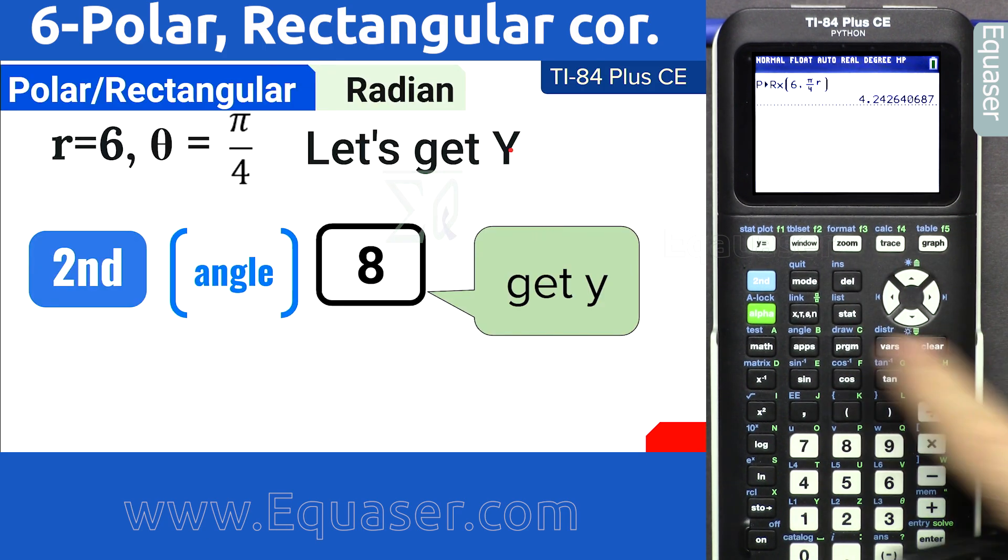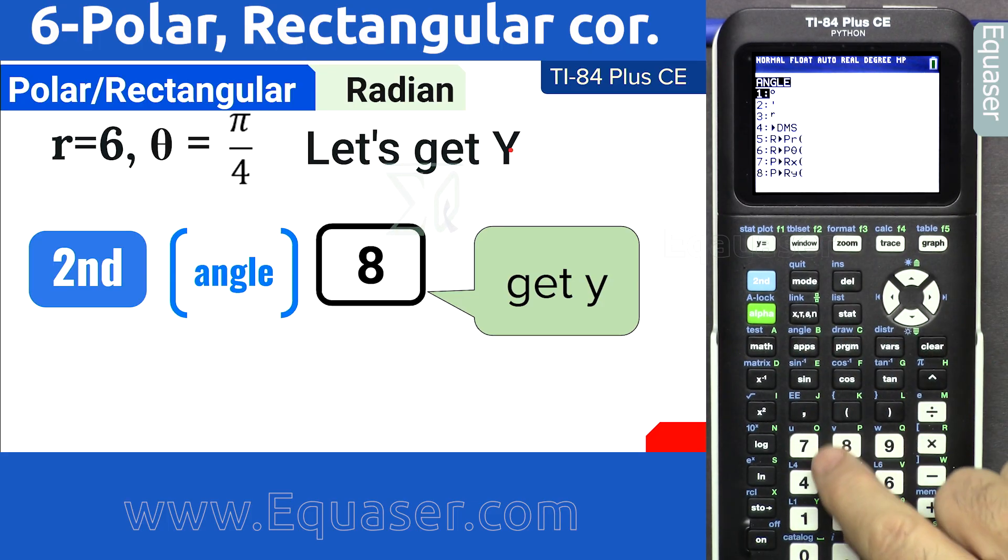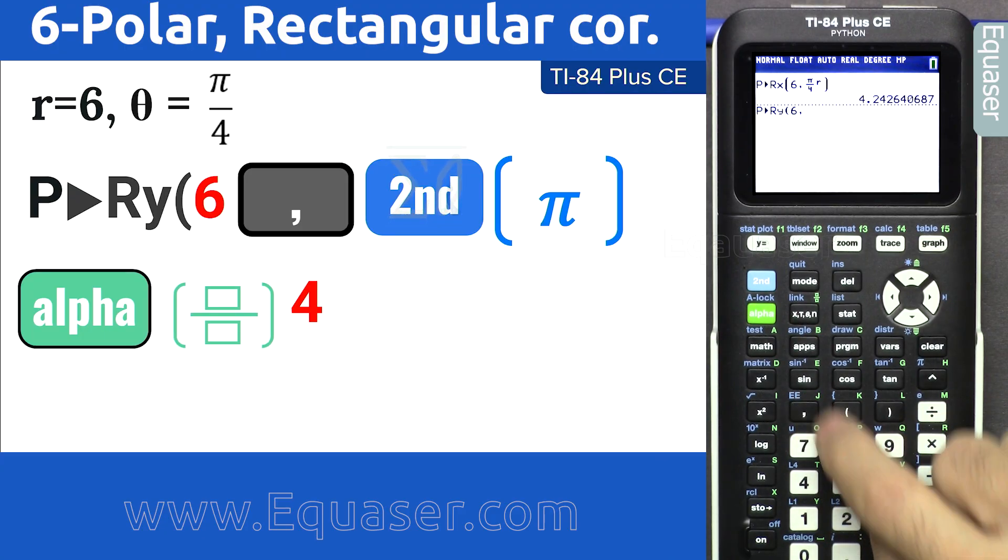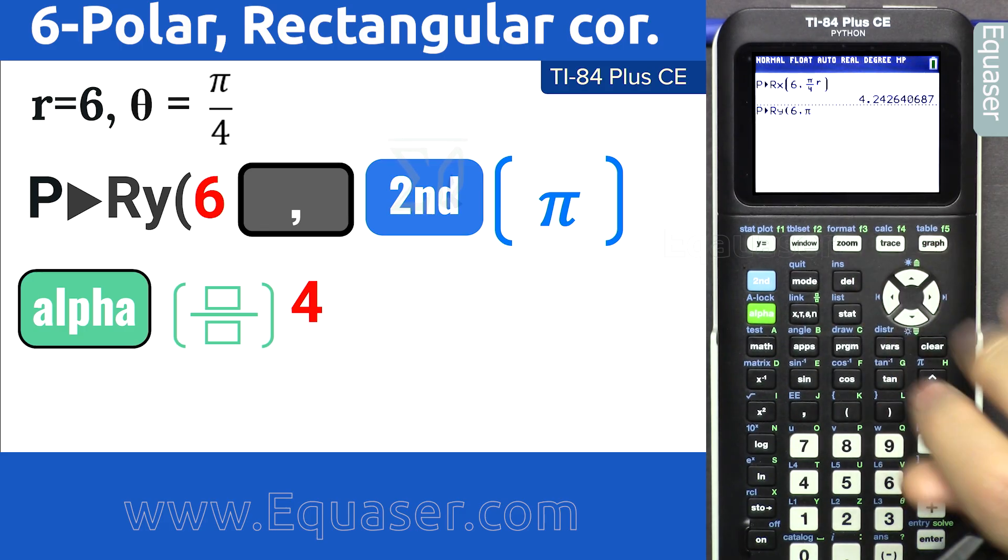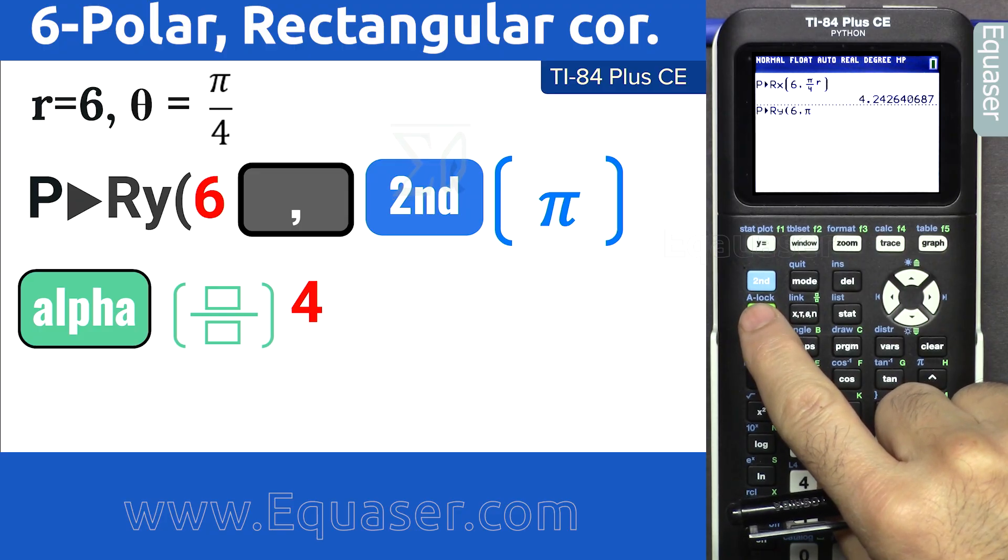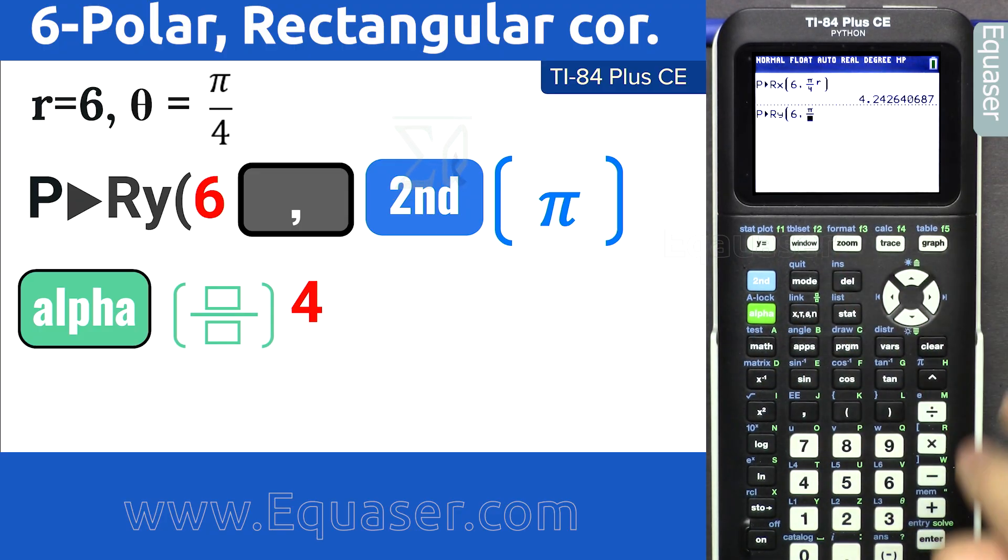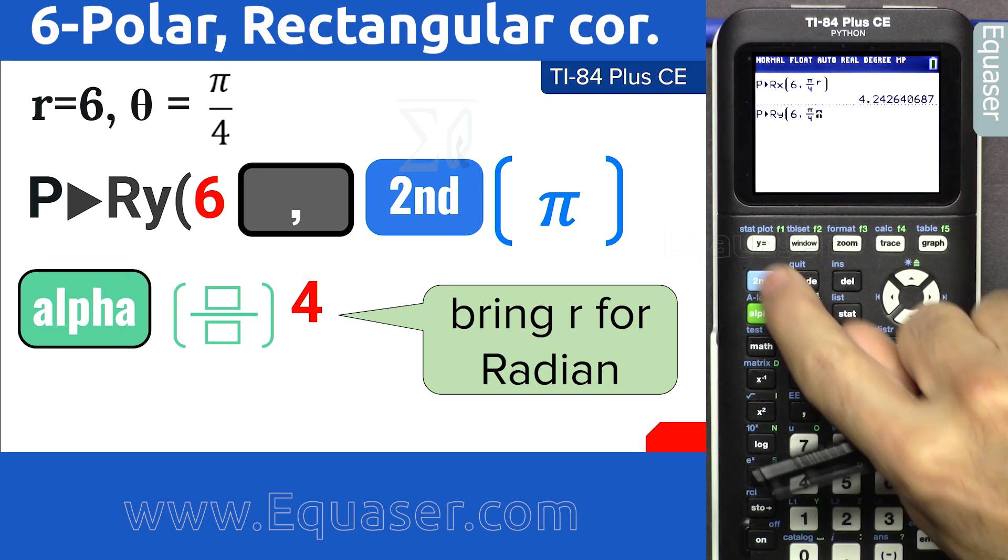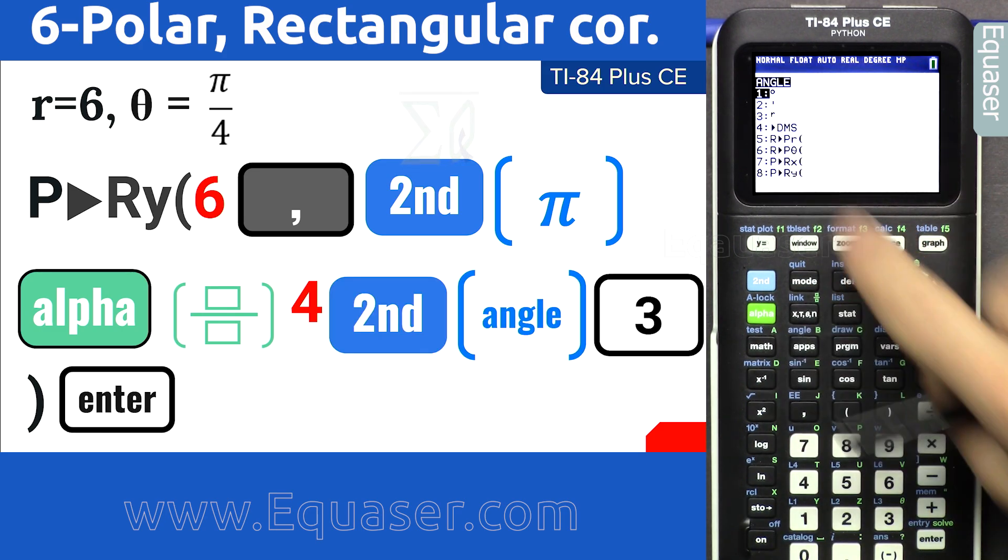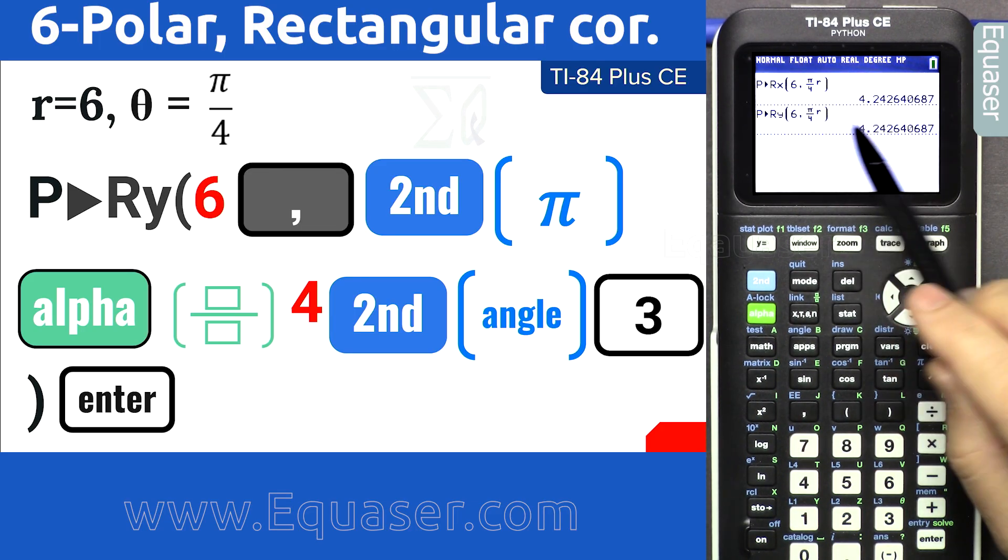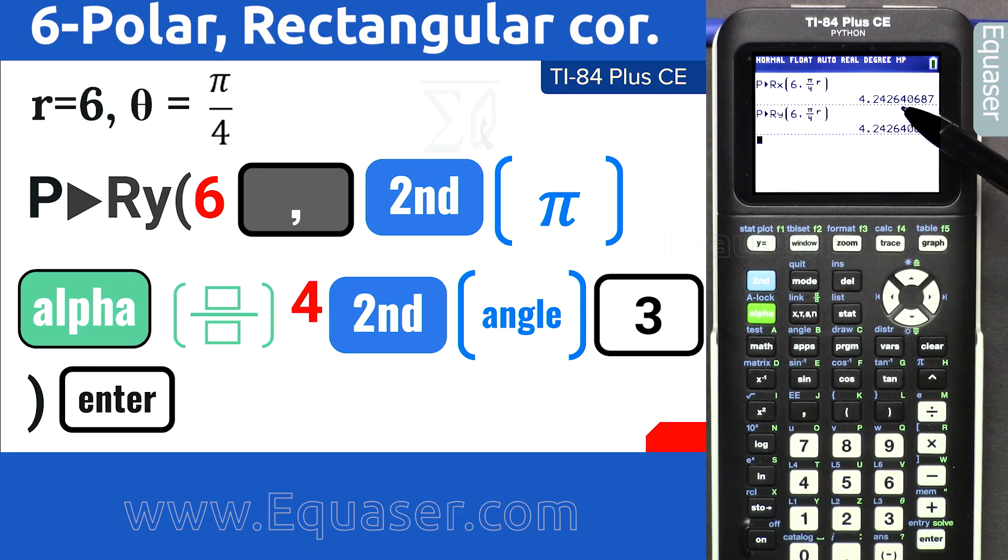Now let's get y. Second function angle and then 8. Now it's y, and then 6 comma, second function π, and then alpha fraction over 4. With the arrow, go to the right. Again, we have to bring r here. Second function angle 3, that's r, close it and enter. As you can see, for x and y we got 4.2426 because the angle is π over 4. This is 45 degrees, so the x and y must have the same value.